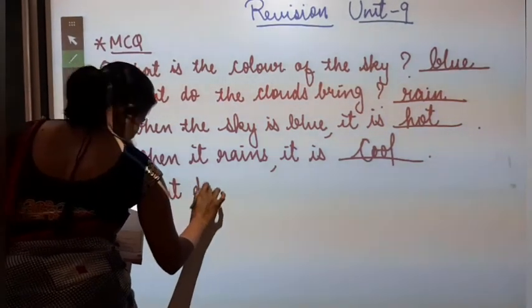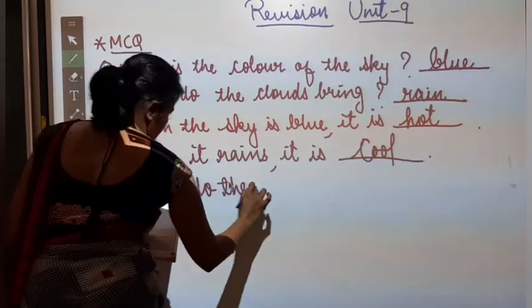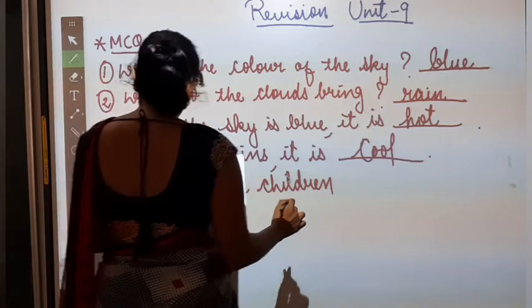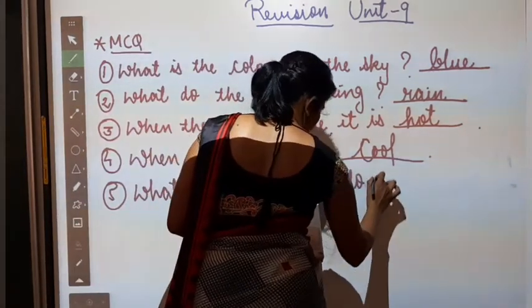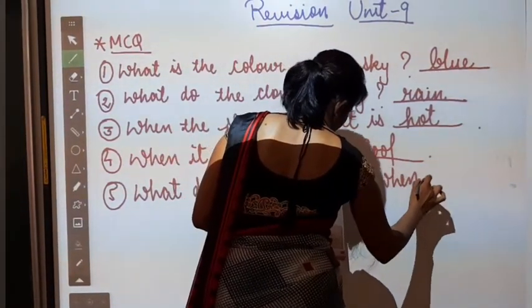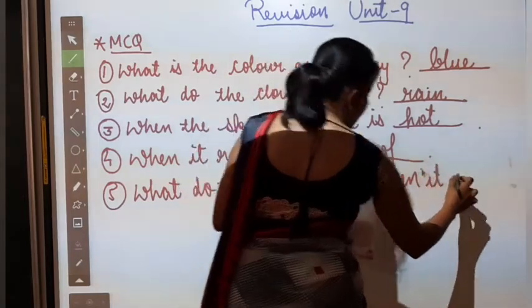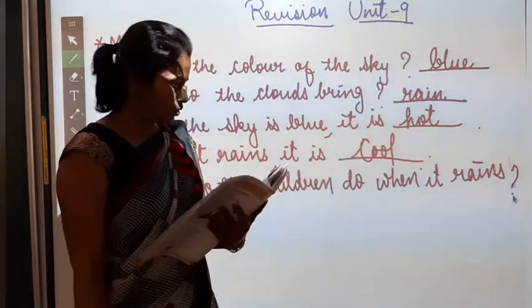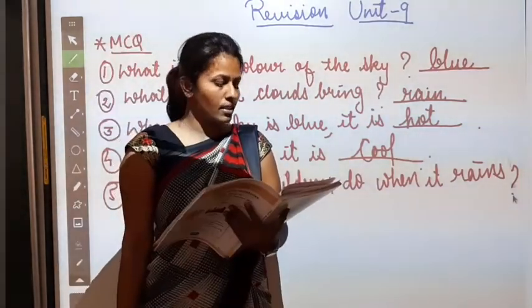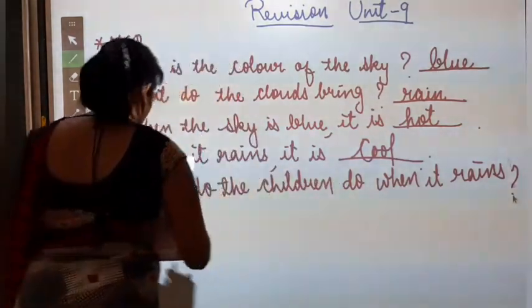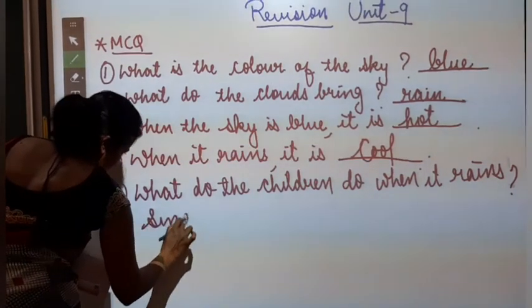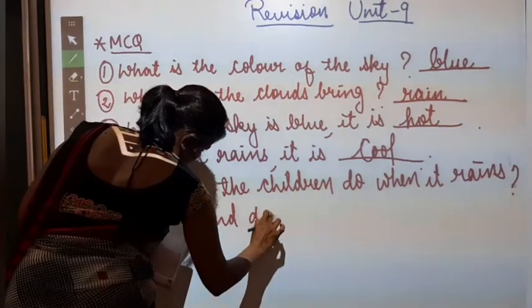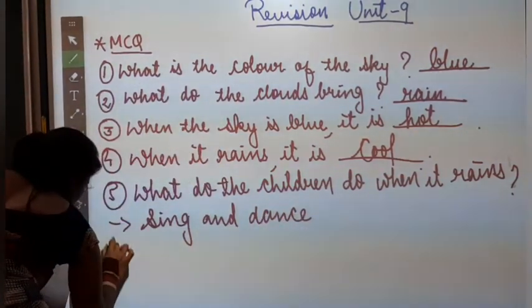What do the children do when it rains? Jeb bodies hoorti hai, then bachje kya karte hain? Sing and dance, cry, sleep, study. So what will these answers? Sing and dance. Okay? Number 6.